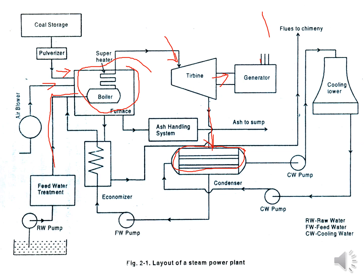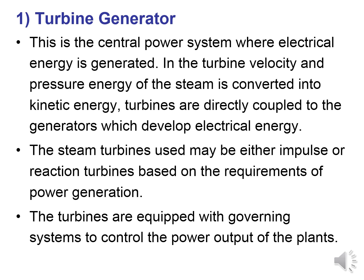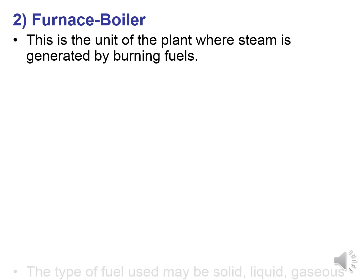The condenser is a device where hot steam is converted into liquid using cooling towers. The output of the boiler is ash, which goes to the ash handling system and stored in a sump. In the turbine, velocity and pressure energy of steam is converted into kinetic energy. Turbines are directly coupled to generators and may be either impulse or reaction type. Governing systems control the power of the plant.